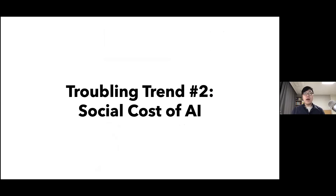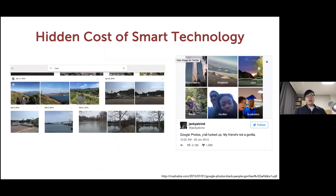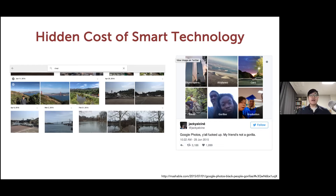The second troubling trend is the social cost of AI. Here I want to bring attention not to the technical part of AI, but to the associated social implications. Google Photos can intelligently identify objects — when I type 'river' I get fairly accurate river photos. But on the other hand, there's the terrible example of the system identifying Black people as gorillas. Who is responsible for this kind of technology and how to avoid these critical errors, fighting against racial bias — these are very important topics that need to be addressed.